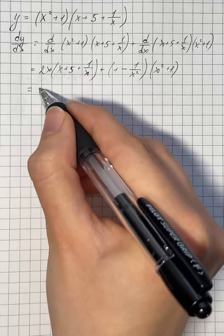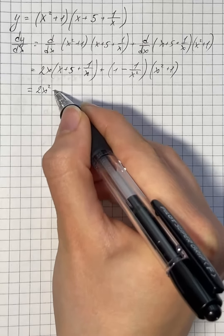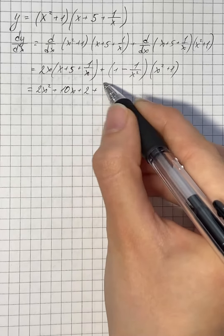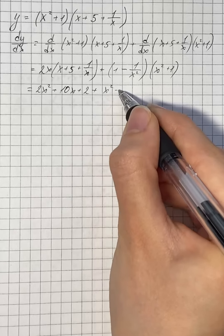Now we're going to expand brackets and we get 2x squared plus 10x plus 2 plus x squared plus 1 minus 1 and minus 1 over x squared.